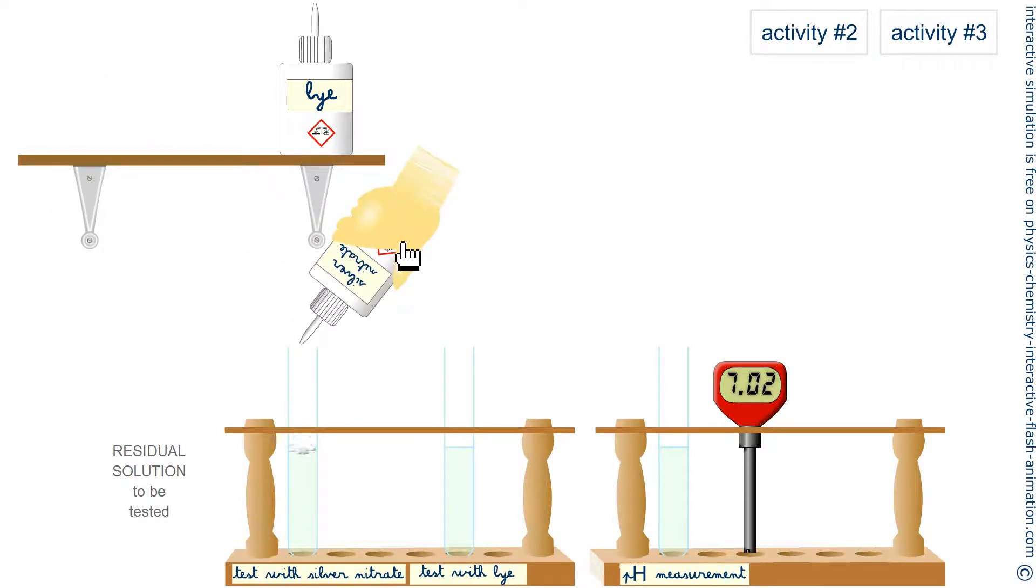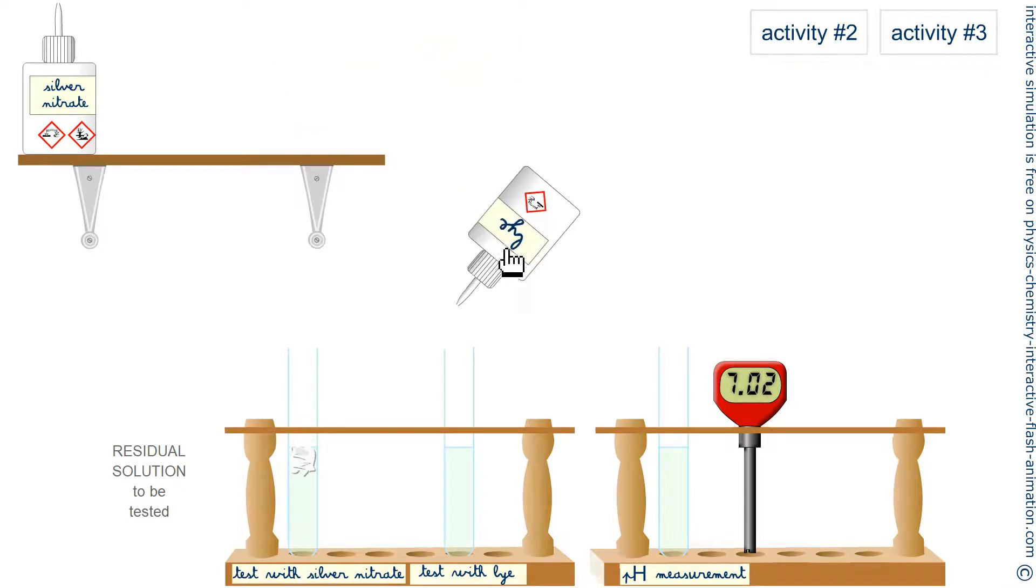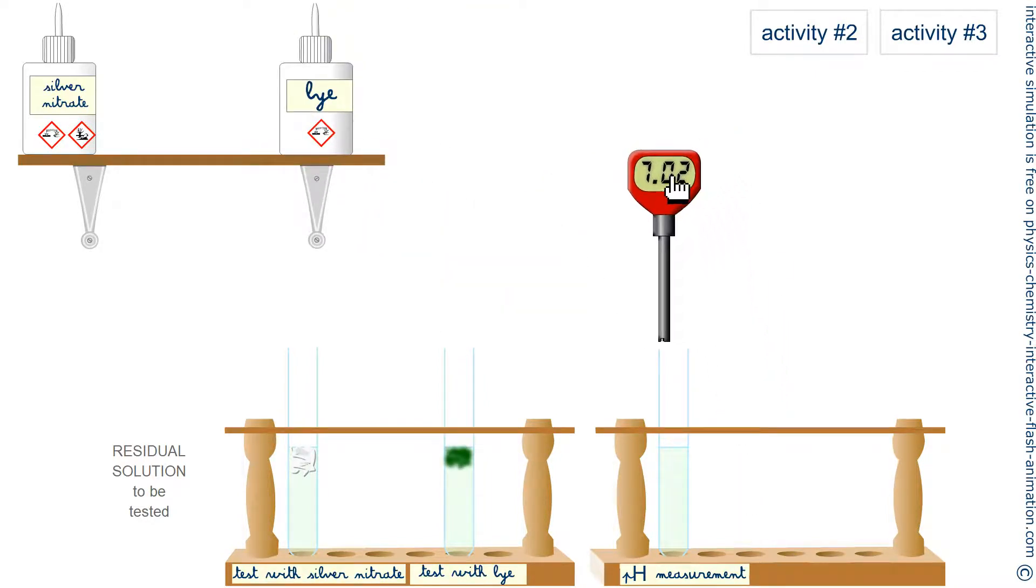If we analyze the final solution, there is a precipitate with silver nitrate. We already had it at the start. With soda, we have a precipitate of green color. And finally when I measure the pH again, I find an acidic pH.